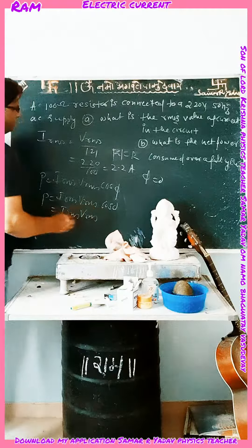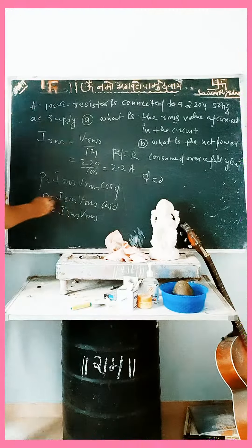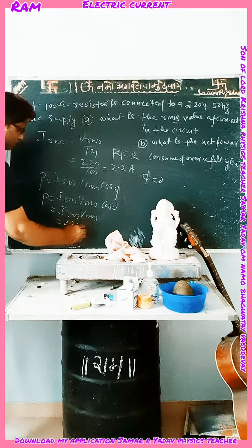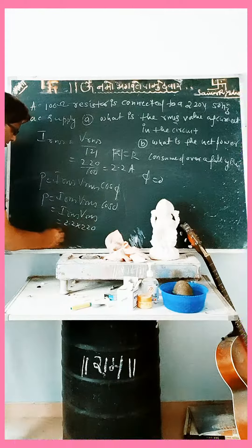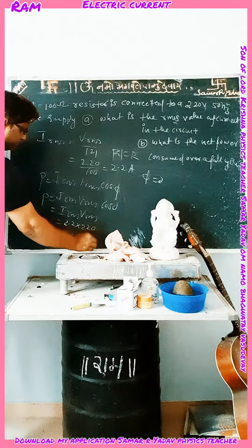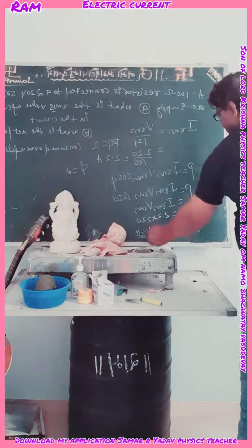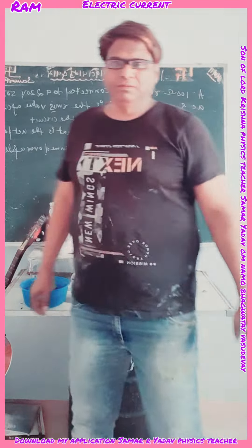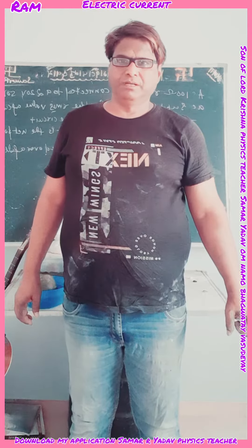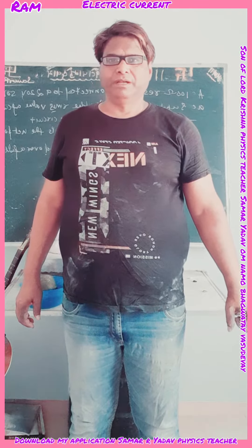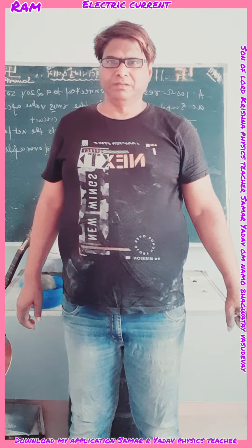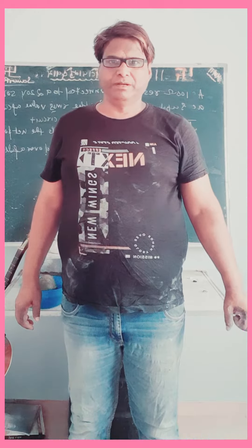What is the RMS value of the current in the circuit and what is the net power consumed over a full cycle? We know that I_RMS is equal to V_RMS divided by Z, and since the circuit has only a resistor, Z is equal to R. So V_RMS divided by R gives 220 divided by 100, which is equal to 2.2 ampere.